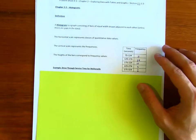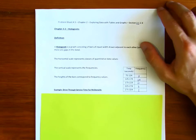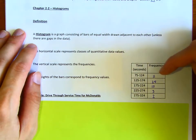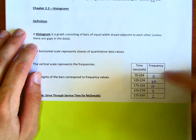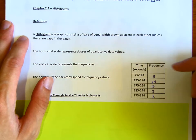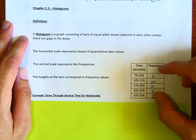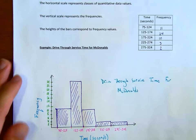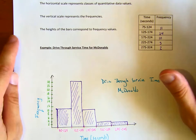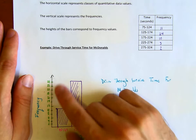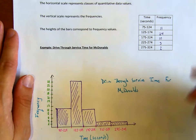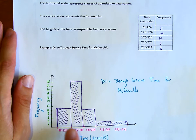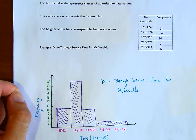Let's go through the actual worksheet together. I gave the definition of a histogram here, and based on the previous example with the McDonald's drive-through, we had 11 frequencies between 75 and 124. In 2.2, the idea is how do we create a histogram based on these data values. It'll look just like this — frequency values on the vertical scale, and the classes (time in seconds) on the horizontal scale. Notice there's no break between the data values; everything is nice and tight together.